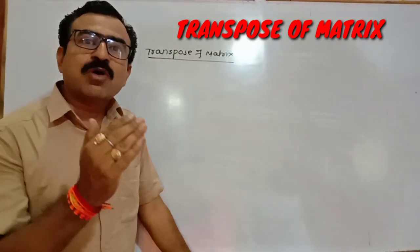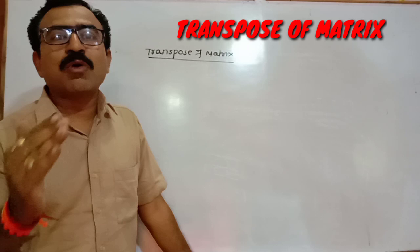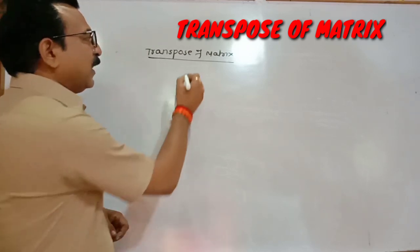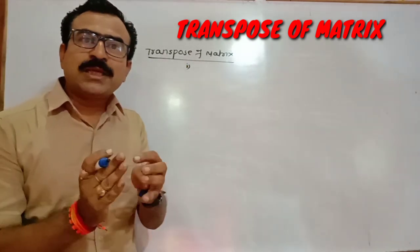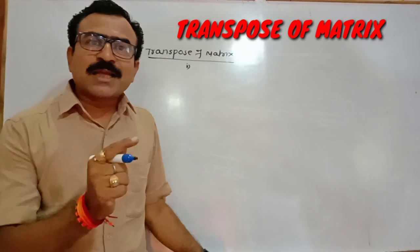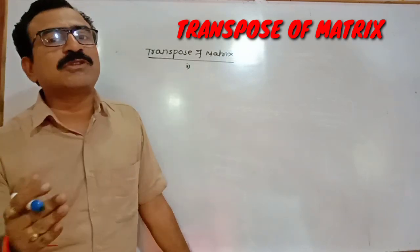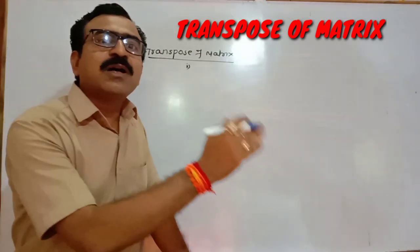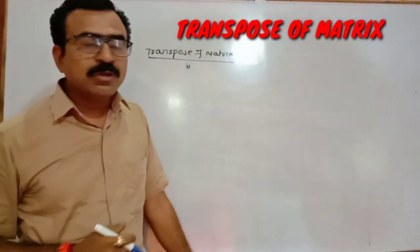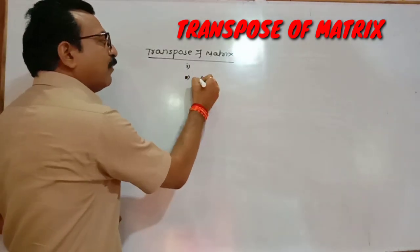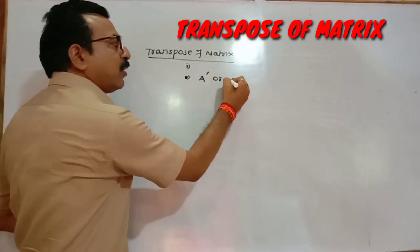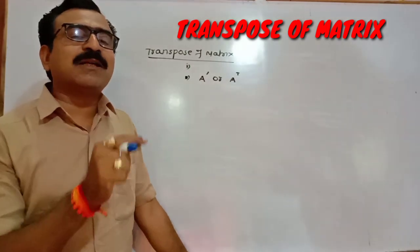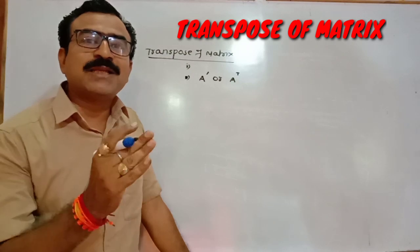The transpose of a matrix is obtained by interchanging rows by columns. To find the transpose, convert the first row into the first column, then convert the second row into the second column, then convert the third row into the third column. The transpose of a matrix is always denoted by A dash or A transpose. To understand the concept better, let us take some examples.